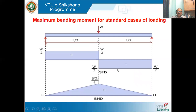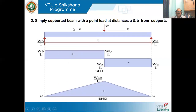For solving numericals on bending stress, we need to remember standard maximum bending moment relations. For a simply supported beam with a point load at the center, maximum bending moment M = WL/4. For a simply supported beam with a point load at distances A and B from the supports (or L1 and L2), maximum bending moment M = WAB/L, or FAB/L, or FL1L2/L.